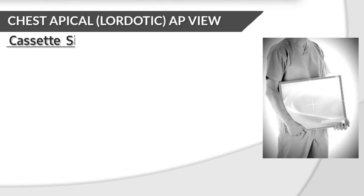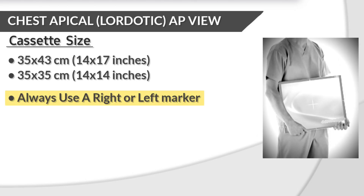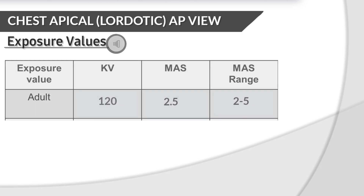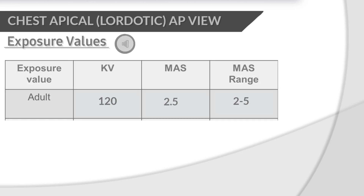Cassette size: 14 x 17 inches and 14 x 14 inches. Exposure values for adult: kV 120, mAs 2.5, mAs range 2-25.